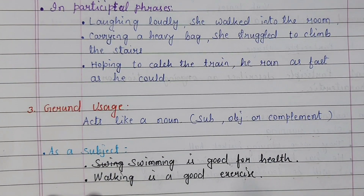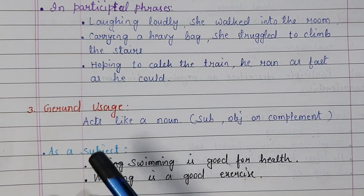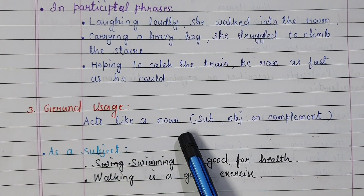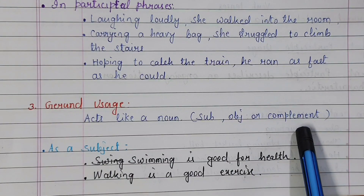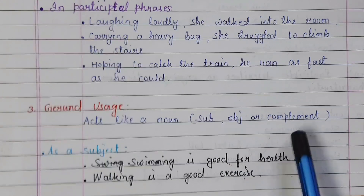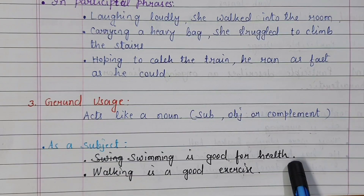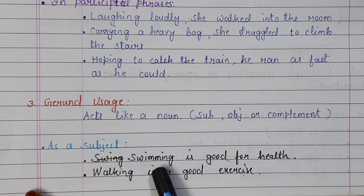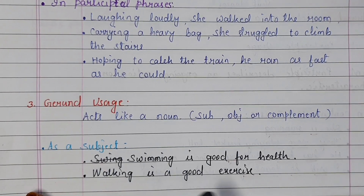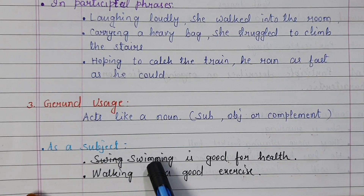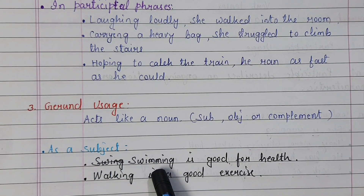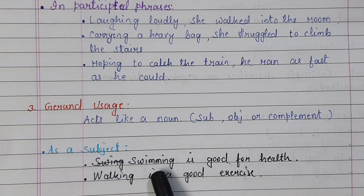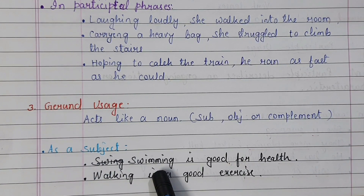Let's see the use of gerund. Gerund acts like a noun and takes the position of subject, object, or complement — three positions. As a subject: 'Swimming is good for health.' Here swimming acts as the subject of the sentence. So swimming is a gerund, not present participle.